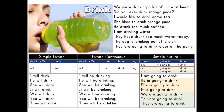Simple Future 1. Auxiliary verb plus base. Auxiliary verb: will. Base: drink. I will drink. He will drink. She will drink. It will drink. We will drink. You will drink. They will drink.